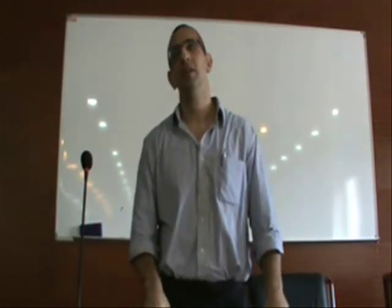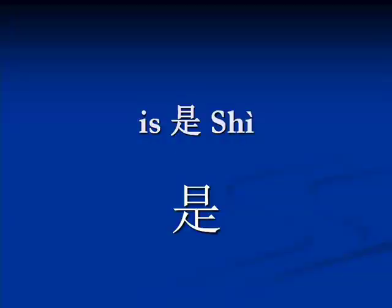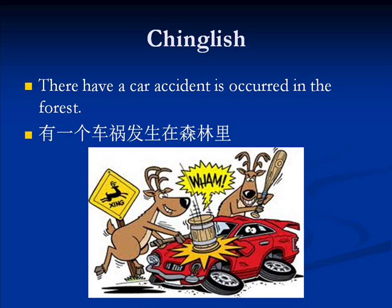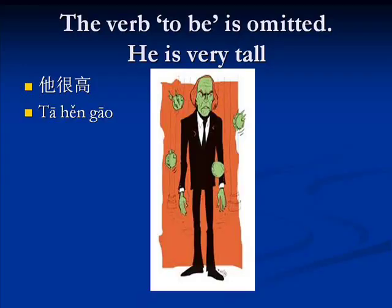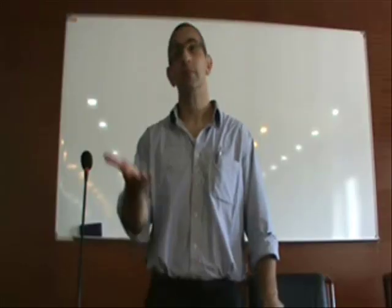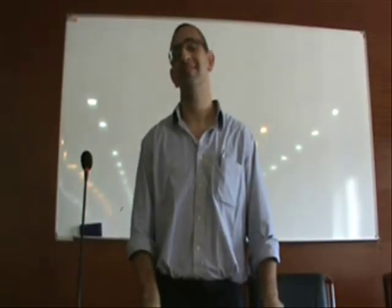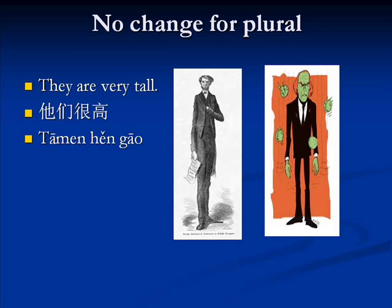The Chinese verb 'to be' is not used as frequently as it is in English. One of the reasons is that Chinese doesn't really have adjectives — they have a state of verbs. For example, in Chinese I would say 'he's very tall' — 'Ta han gao' — without using the verb 'to be.' We just use 'tall' because it's not really an adjective; it's a state of verb.